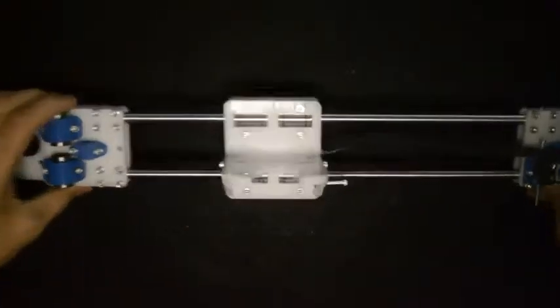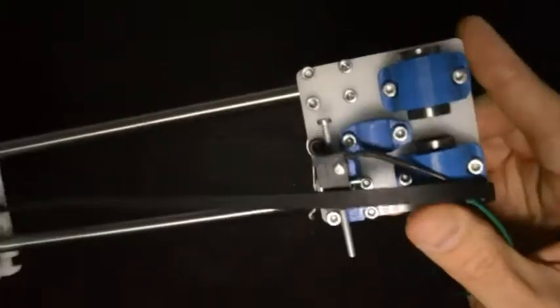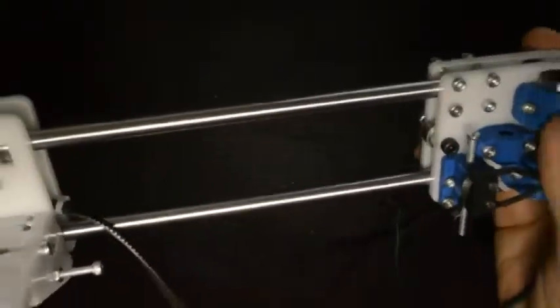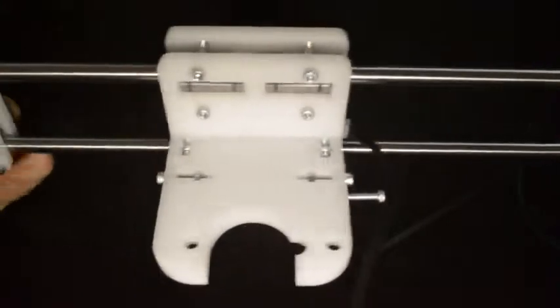When you're done with that, this assembly should look like that. And the X-carriage should be able to move freely on the linear rails.